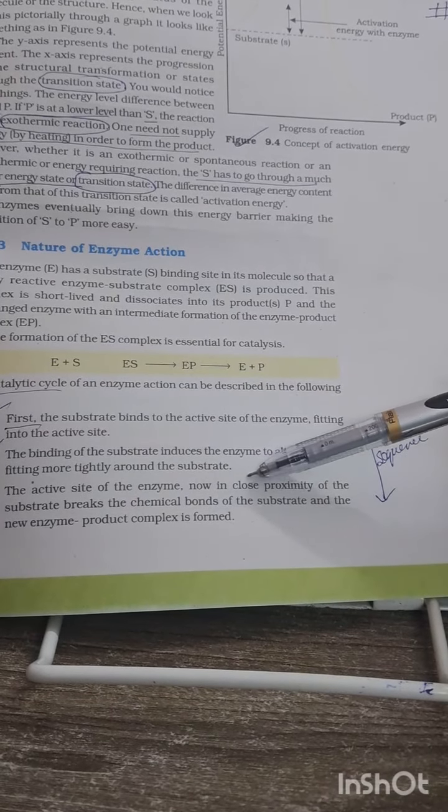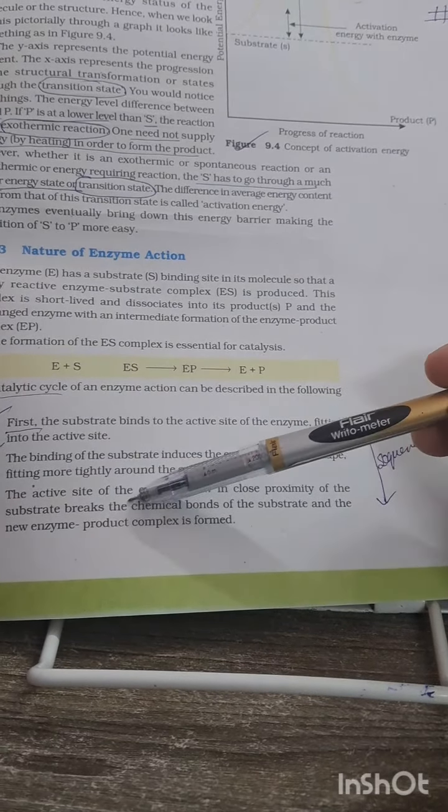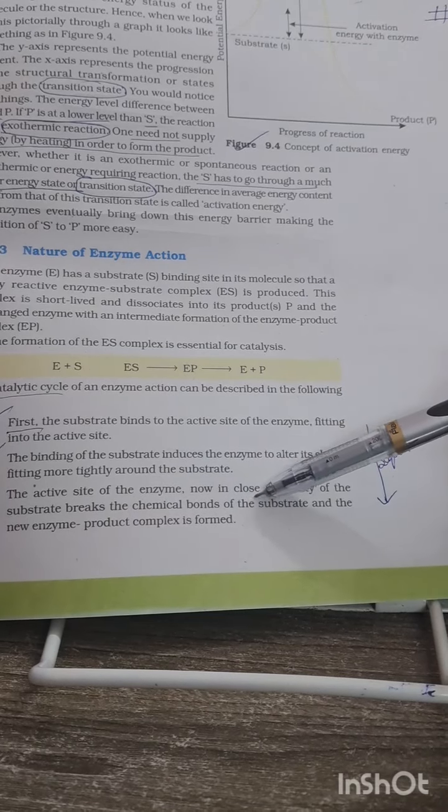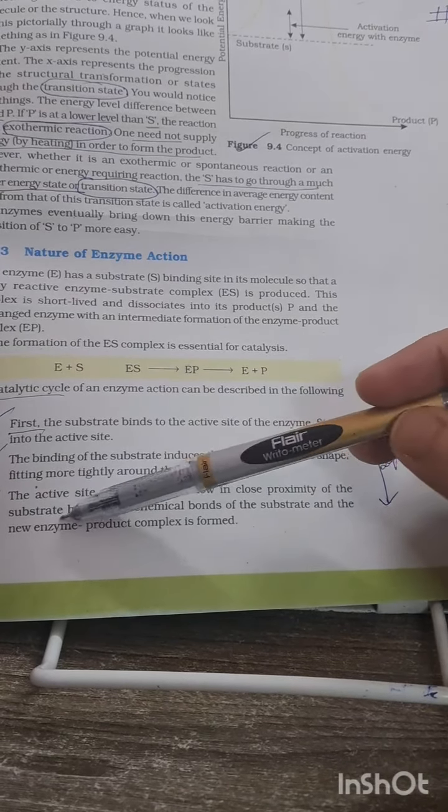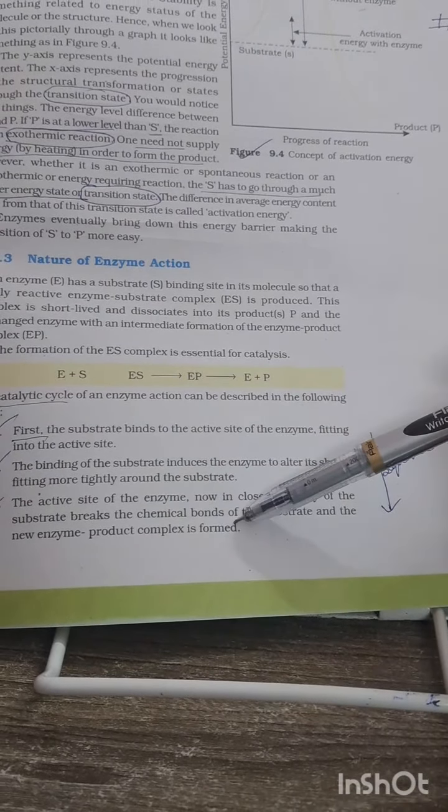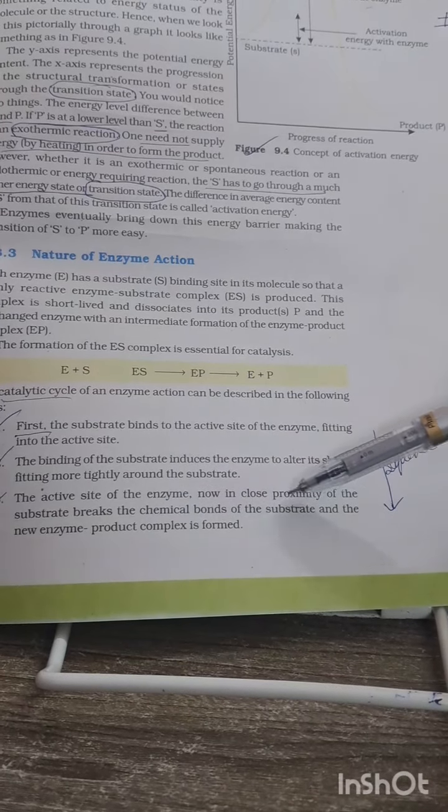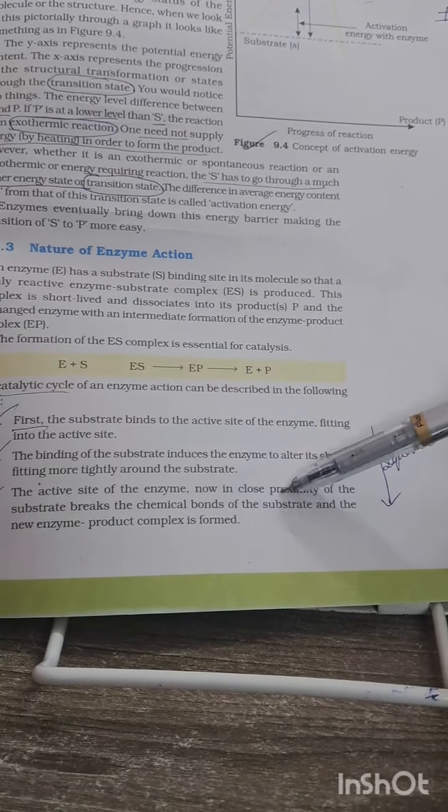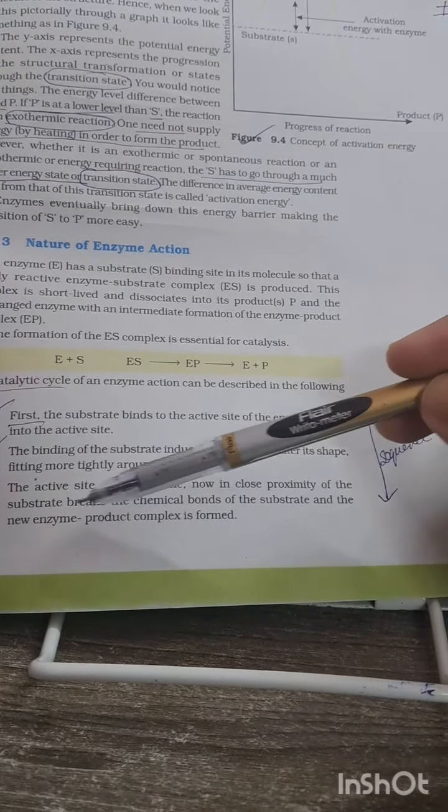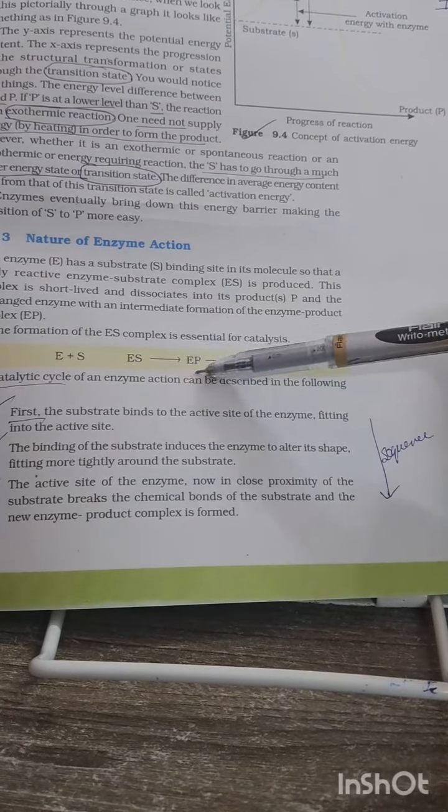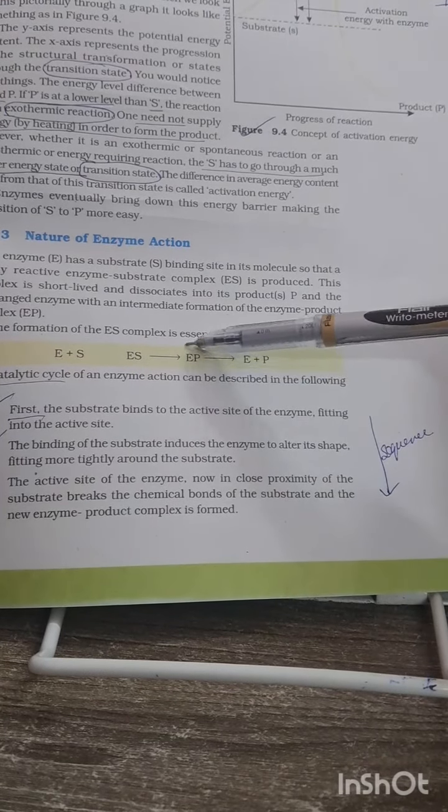Now the active site of the enzyme, now in close proximity of the substrate, breaks the chemical bonds of the substrate and the new enzyme-product complex is formed. Now the substrate bonds break and the enzyme-product complex is formed. Here you can see enzyme-substrate to enzyme-product complex is formed.